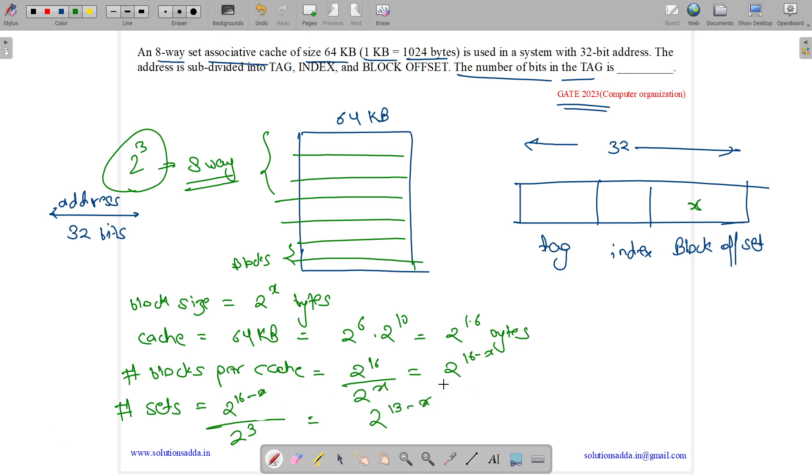So number of bits for index will be 13 minus X. Let us assume T bits for the tag. Then what is the total size? It's 32.